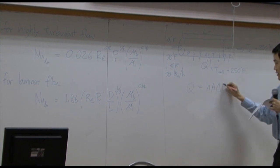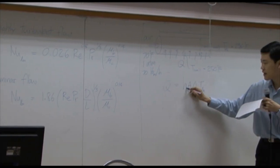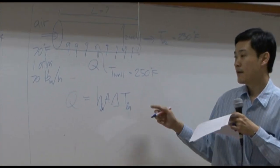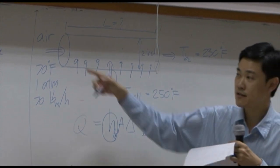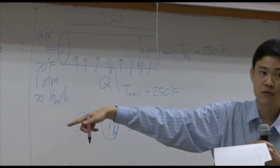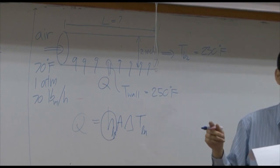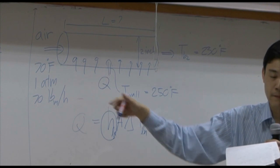If you use delta T log mean, H here will be H log mean. H here must be calculated using some kind of empirical equation or using a chart. In your textbook, there will be a chart given that you can calculate Nusselt number as well.